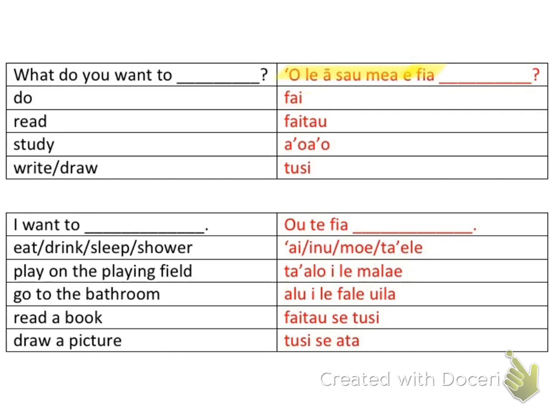What do you want to study? What do you want to write or draw? 'O lea sa'o mea ai fia' — and then you add the action, like 'to see.'